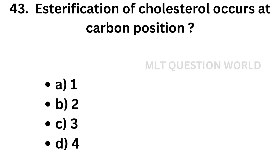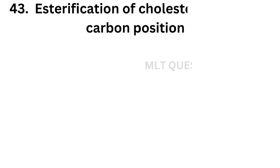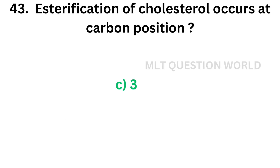Question number 43: Esterification of cholesterol occurs at which carbon position? Option A: 1, option B: 2, option C: 3, option D: 4. The correct answer is option C, position 3. The esterification of cholesterol occurs at the third carbon atom.